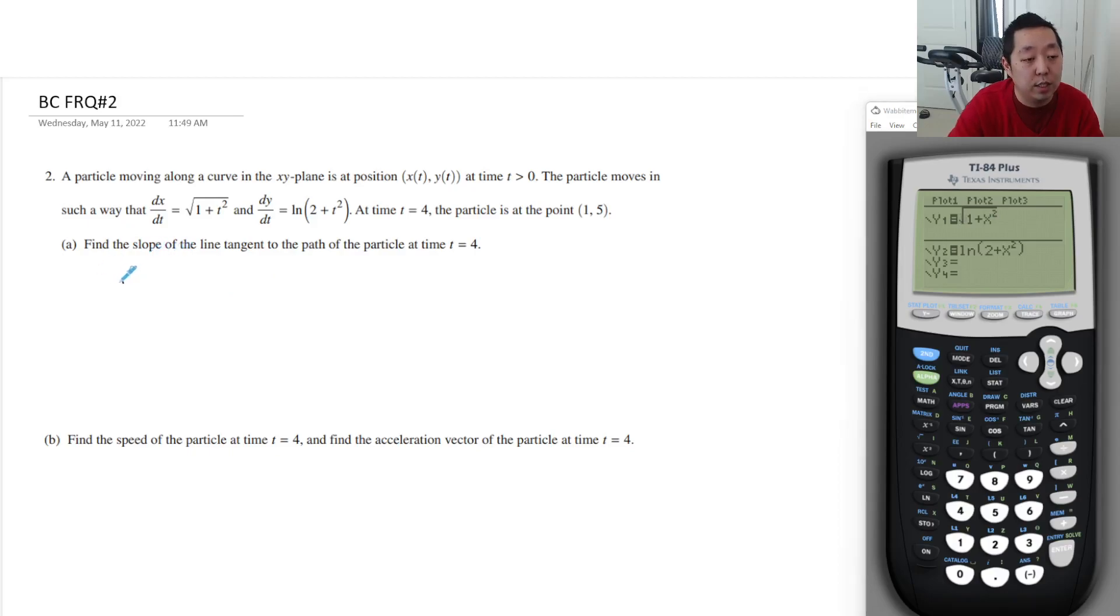Find the slope of the tangent line. That means I want dy/dx, which by chain rule is dy/dt over dx/dt, or it's a rearrangement of chain rule. Now, they already gave this to you, so you want to do ln of two plus t squared over square root of one plus t squared. You don't need to take any more derivatives.